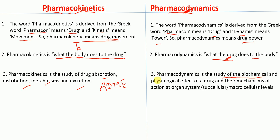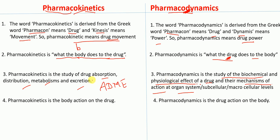Pharmacodynamics is the study of biochemical and physiological effects of a drug and their mechanism of action at the organ level, system level, subcellular, or macrocellular level. In summary, pharmacokinetics is the body's action on the drug, and pharmacodynamics is the drug's action on the body.